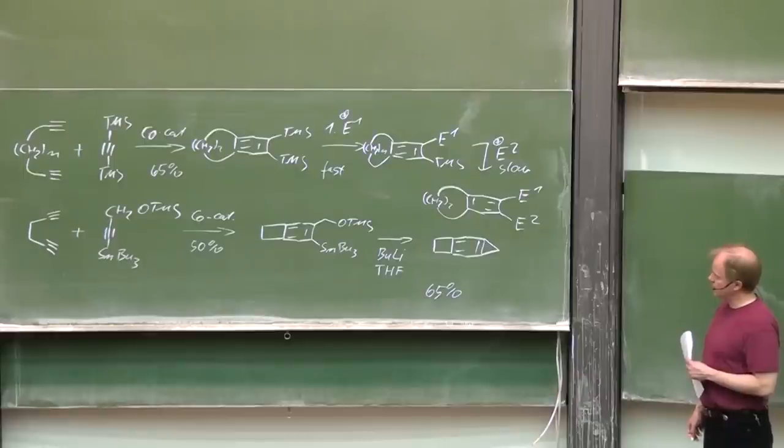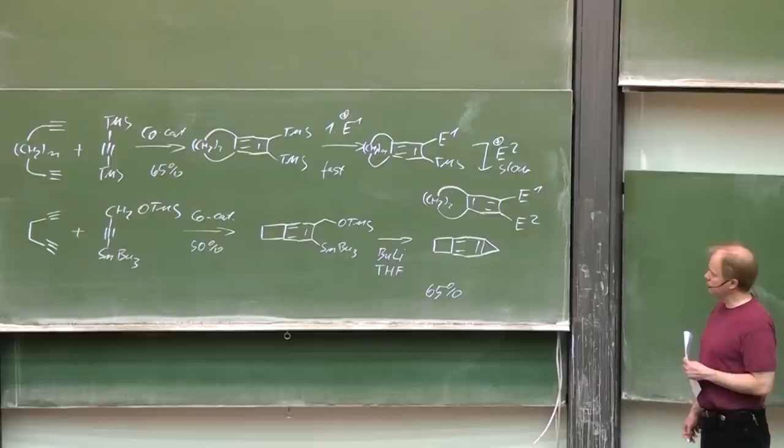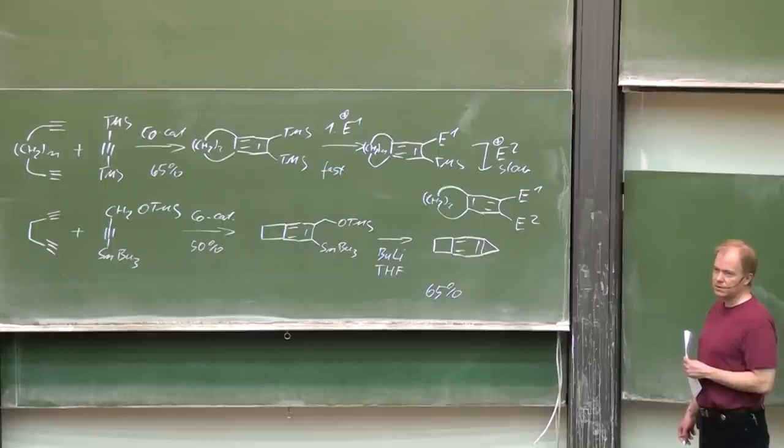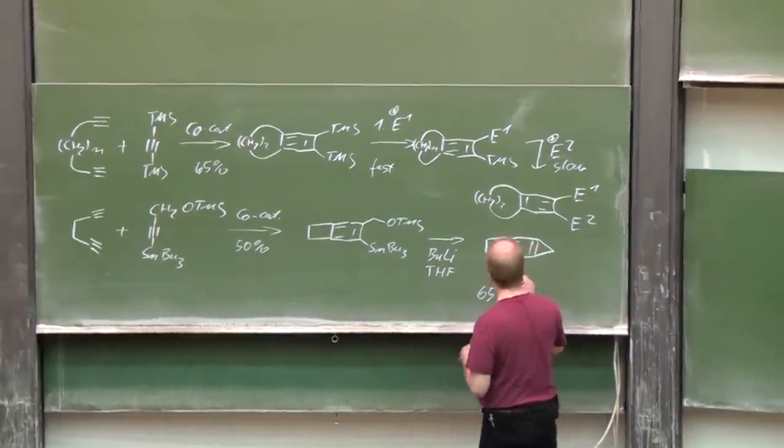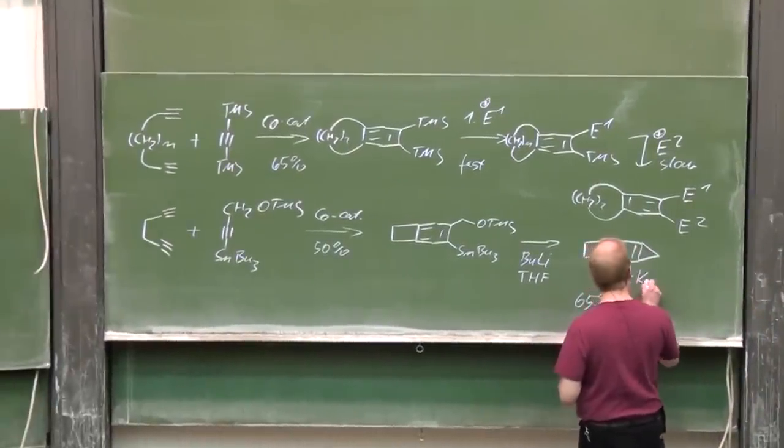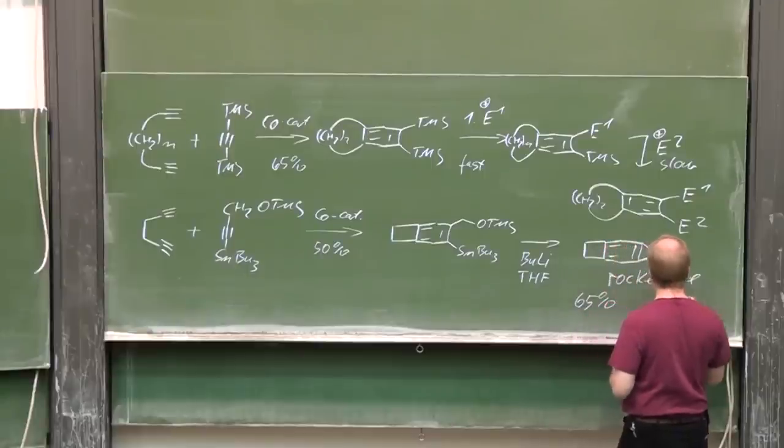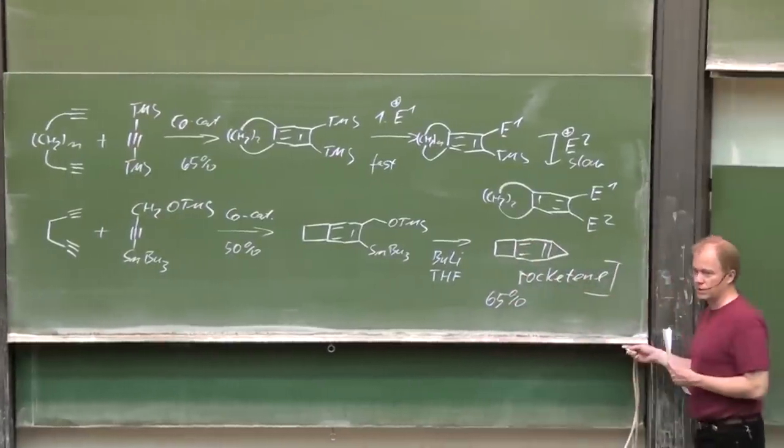An annelated benzene ring with two strained rings attached. You might guess how this hydrocarbon is called. Its name is rocketene. And you might guess why.